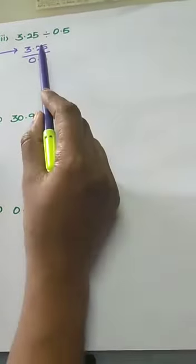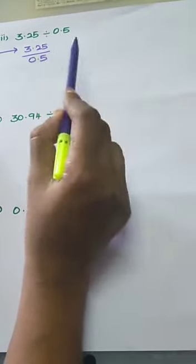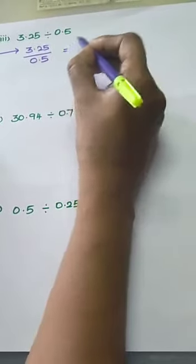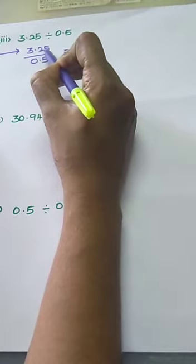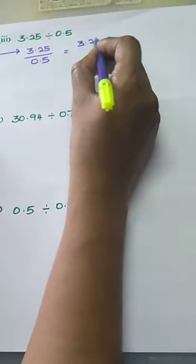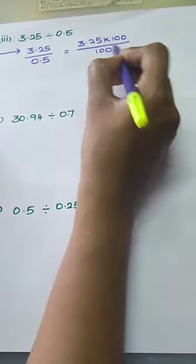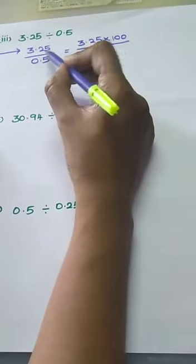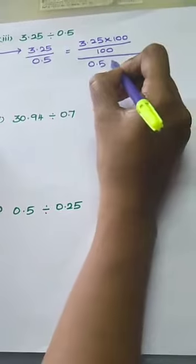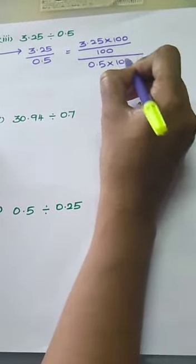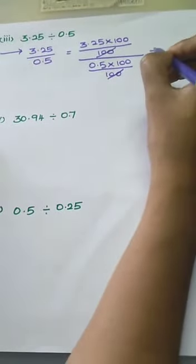So we multiply both the numerator and the denominator using the same value 100, because we want to remove the decimal point and we need to move it 2 places. So 3.25 into 100, and we also divide using the same number 100. Then 0.5 into 100 by 100 — the two 100s cancel automatically. The numerator value becomes 325.